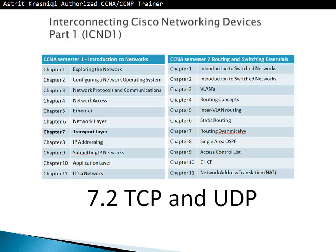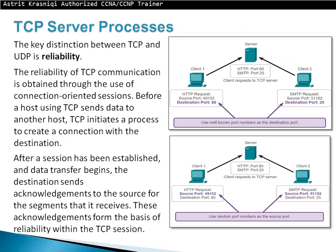Now we will move to section 7.2, TCP and UDP — still part of chapter 7, Transport Layer. We begin with TCP and the TCP server process.